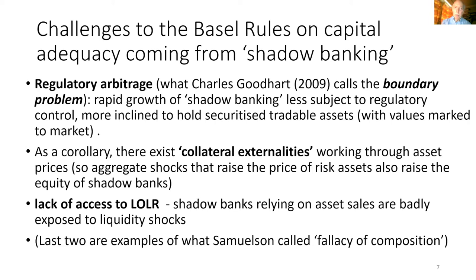I now turn to the challenges to the Basel rules that come not from deposit banks but from shadow banks. Shadow banks are the more active members of the banking community, and one reason is because they do what Charles Cotard calls regulatory arbitrage, or what he calls the boundary problem. Shadow banks grow fast because they're less subject to regulatory control, and they're more inclined to hold securitized, tradable assets with values mark-to-market. However, there exist collateral externalities working through asset prices, so aggregate shocks that change the price of risk assets also change the equity of shadow banks. Another aspect of shadow banking is they don't have automatic access to lender of last resort, so they rely on selling assets and are badly exposed to liquidity shocks.